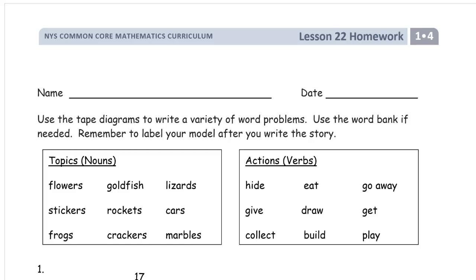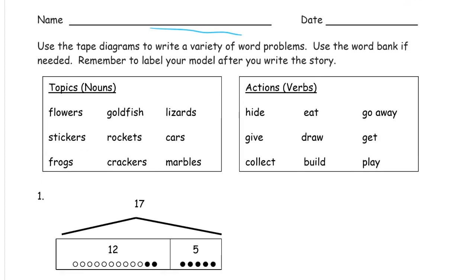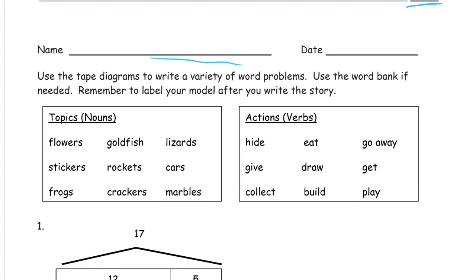Welcome to the homework for lesson 22. This is module 4 of first grade. Name first. And we get to be a little creative on this one, using tape diagrams to write a variety of word problems. They're giving us the tape diagrams and we have to make up the problems.